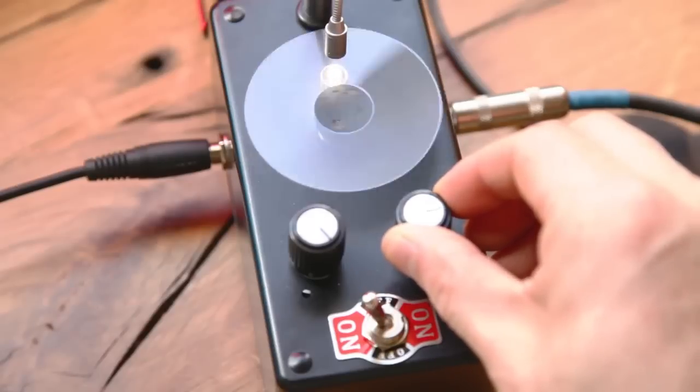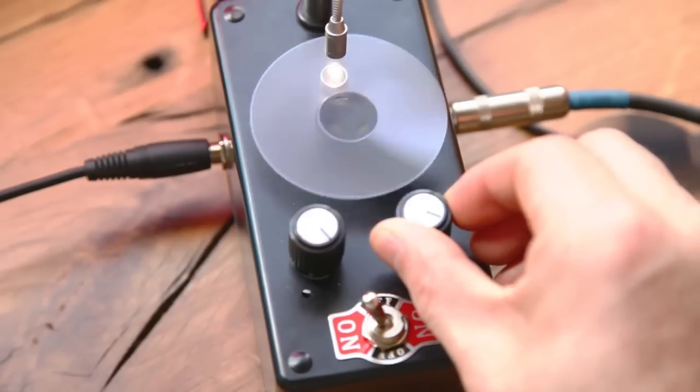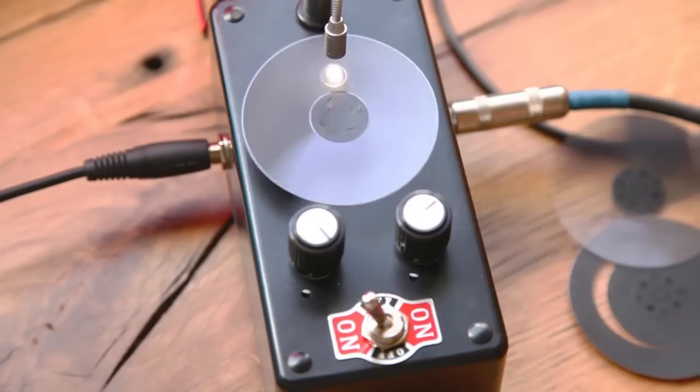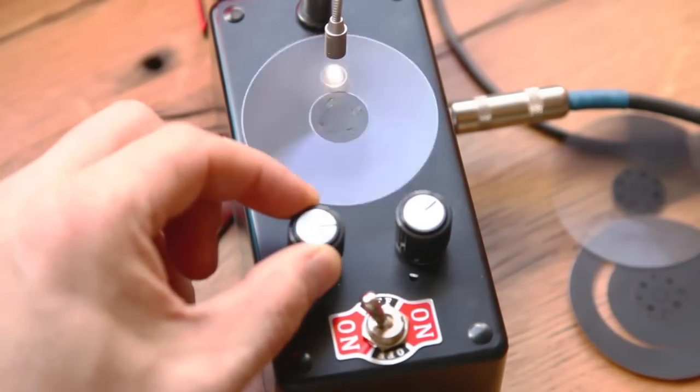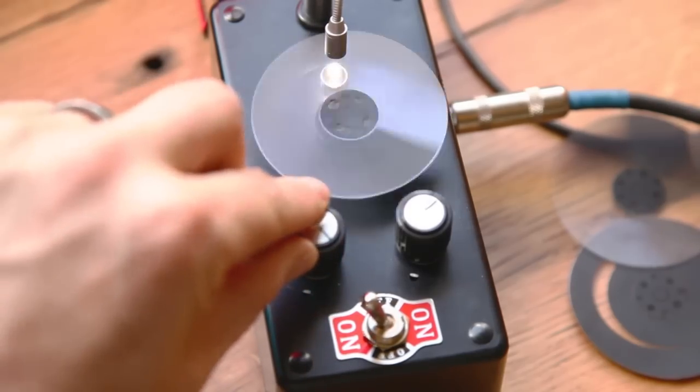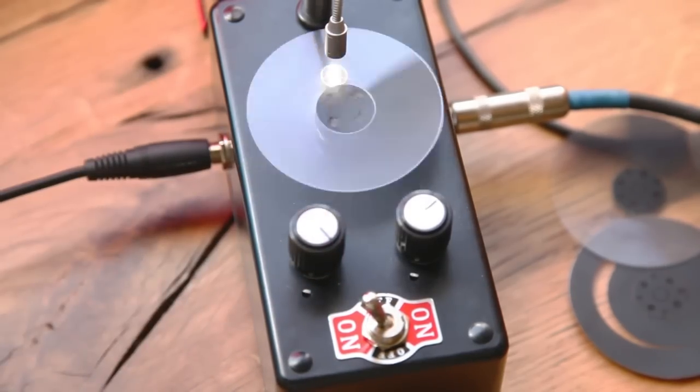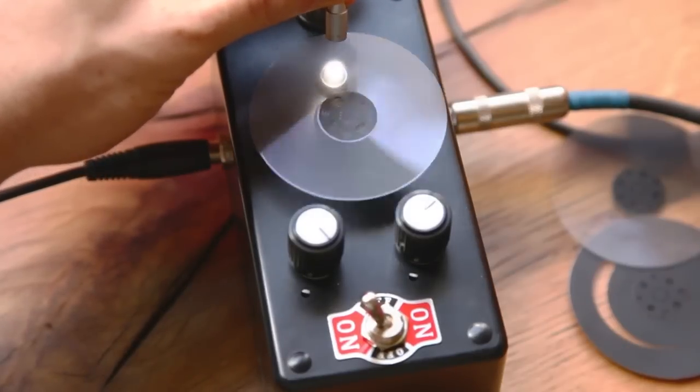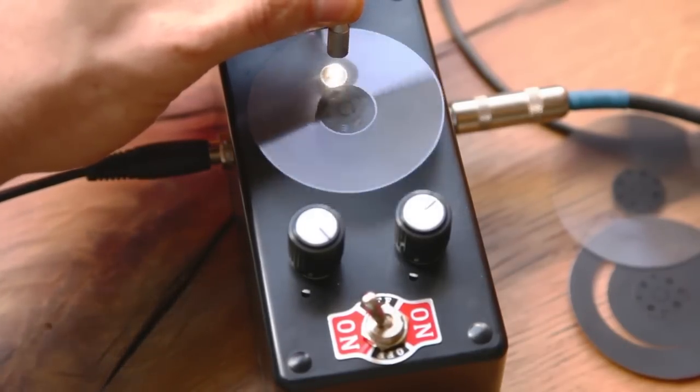The knob on the right above the switch controls the motor rotation speed. Turn the speed up and then adjust it back down to get lower speeds. The knob on the left controls the intensity of the tremolo effect. Turn it clockwise for more tremolo or counterclockwise for less. The brightness of the light on the photoresistor also affects the tremolo intensity, so try moving the light around.